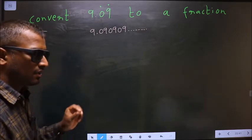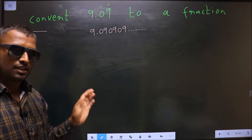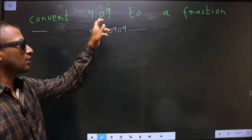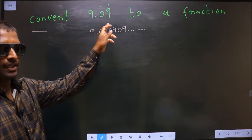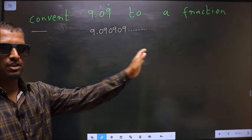See, when a dot is present on whatever number, it means that number keeps on repeating. Here dot is present on 0 and 9. That means 0, 9, 0, 9, 0, 9 keep on repeating.